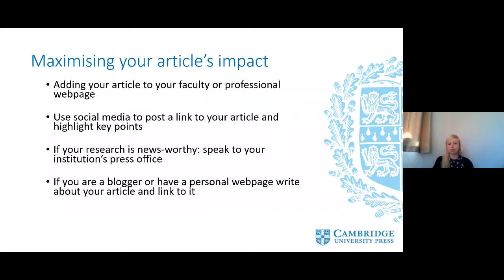Once your paper is published, the next thing to think about is how to maximise your article's impact. Here are some tips to maximise the potential of your article to be seen, read and cited. You could add your article to your faculty or professional web page. Use social media to post a link to your paper and highlight key points. If your research is newsworthy, speak to your institution's press office. If you are a blogger or have a personal web page, write about your article and link to it. Evidence has shown that author promotion of papers can be hugely beneficial in helping to increase usage and citations.